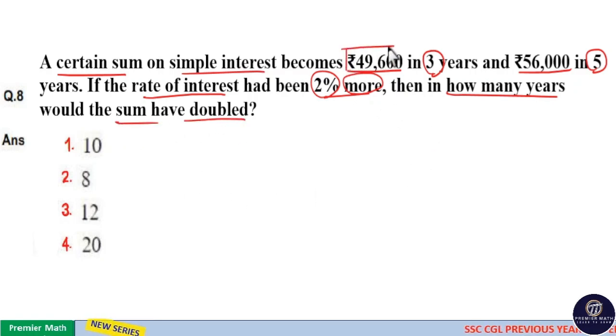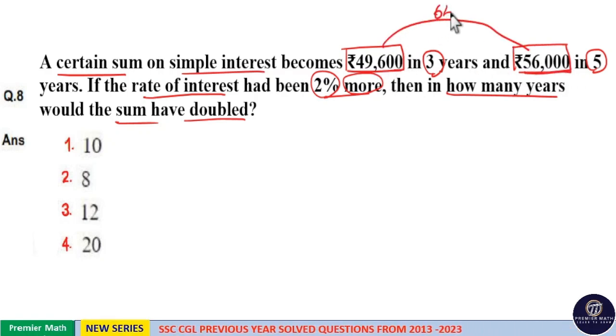The difference between the 3-year sum and 5-year sum is ₹6,400. This amount was generated in 5 minus 3, which is 2 years. So in 2 years, the extra amount generated is the interest.